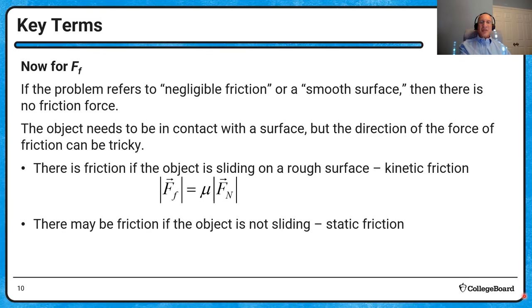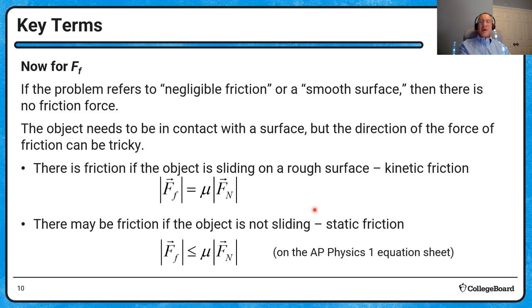The key equations: friction equals mu (the coefficient of friction) times the normal force. This equation is not explicitly on the equation sheet, but the definition of static friction is that the force of friction is less than or equal to the coefficient times the normal force. Static friction doesn't have to equal a certain value — it's anything less than or equal to mu times the normal force. Kinetic friction must equal the coefficient times the normal force, and these two coefficients are typically different.